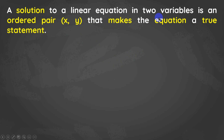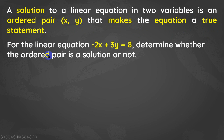Another important thing to remember in a linear equation in two variables is about its solution. A solution to a linear equation in two variables is an ordered pair that makes the equation a true statement. For the linear equation negative 2x plus 3y equals 8, determine whether the given ordered pairs are solutions. The first ordered pair is negative 4 and 0, where the first number is the x-coordinate and the second is the y-coordinate.